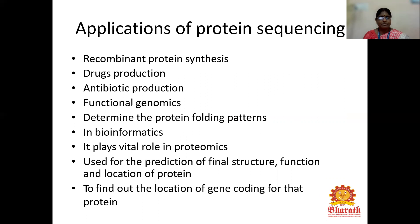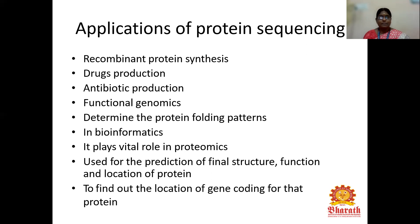Applications of protein sequencing methods include recombinant protein synthesis, drug production, and antibiotic production using secondary metabolite generation. It is used in functional genomics as drug therapy, to determine protein folding patterns, in bioinformatics to design software tools, and plays a vital role in proteomics. It is used for prediction of the final structure, function, and location of various proteins, and to find the location of the gene coding for a particular protein. N-terminal and C-terminal sequencing methods are the most commonly used in protein sequencing technologies.